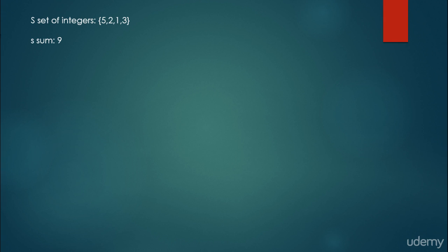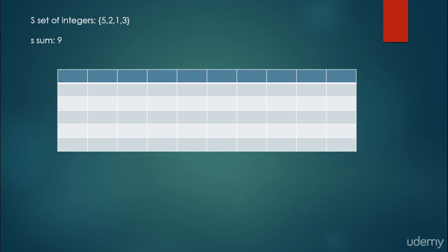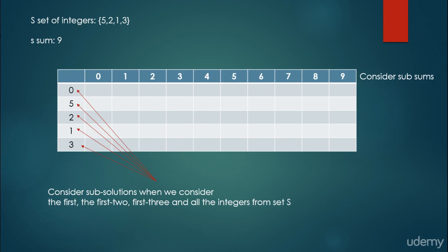Let's consider the situation where we have the set S of integers {5, 2, 1, 3} and the target sum S is equal to 9. We create our dynamic table, and the column headers will be the sub-sums: what would be the solution if the sum were 0, 1, 2, 3, 4, up to 9. Of course 9 is the final solution we are looking for, but we try to make sub-problems and compute them on a step-by-step basis.